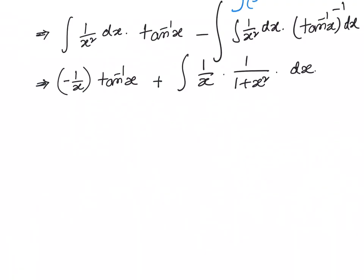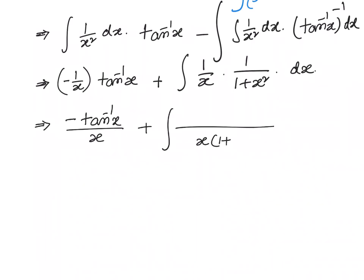Let us go to the next step. That equals minus tan inverse x divided by x, plus the integral of 1 over x into 1 plus x square dx. To simplify the integrand, we will add and subtract x square in the numerator, so that we can cancel 1 plus x square terms and simplify.